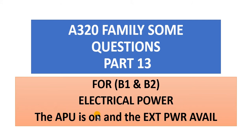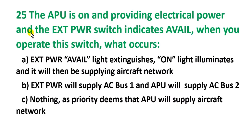The question is about the APU being on and external power being available. The APU is on and providing electrical power and the external power switch indicates available. When you operate this switch — the external power switch — what occurs?